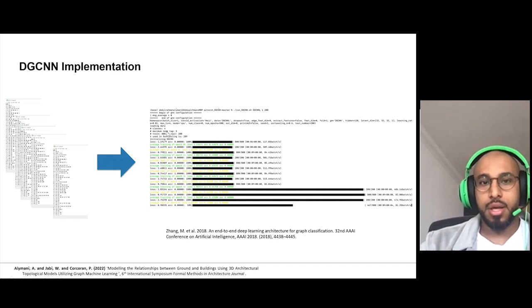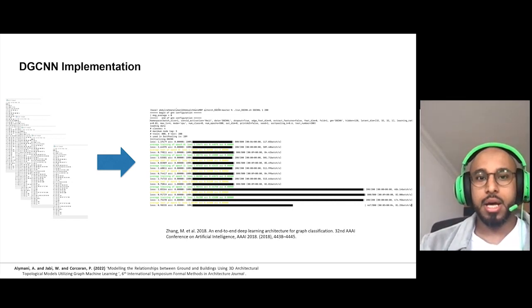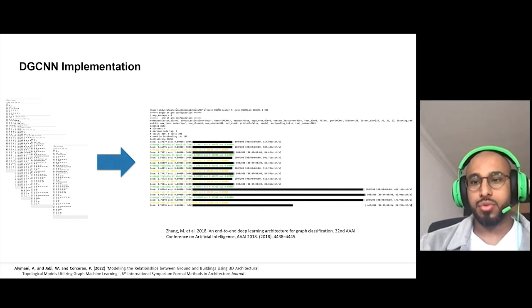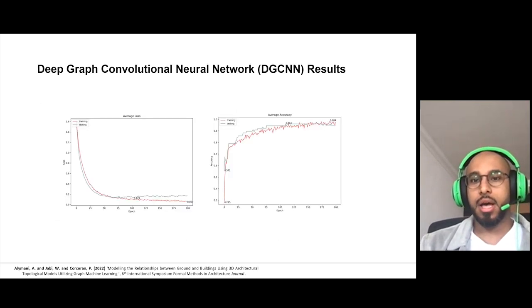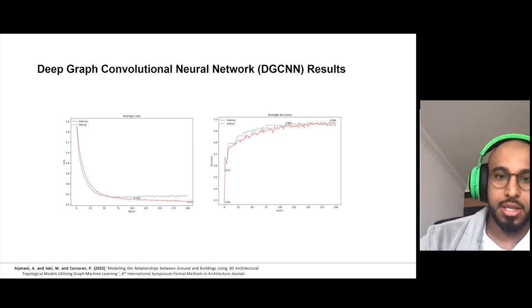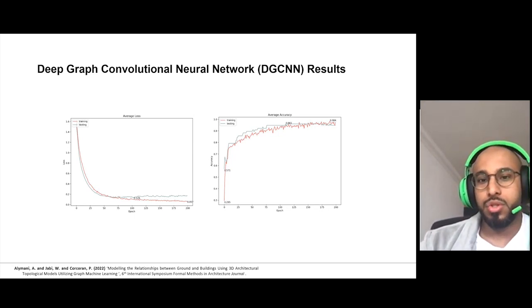And then we divided it to 800 for training and 200 for testing. And then we gave it to machine learning and ran that into machine learning. And it gives us a really high accuracy, which is around 96 or 95, between 95 and 96, depending on the hyperparameter that we use.